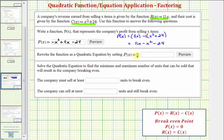So if we set P(x) equal to zero, our equation would be 0 = -x² + 11x - 24.